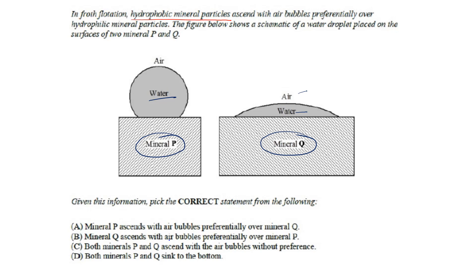If you see here, in the case of mineral P, the water is in the form of a bubble, and the attachment of mineral P with water is less. And in the case of mineral Q, the water is spread over a larger surface, meaning the attachment is more.